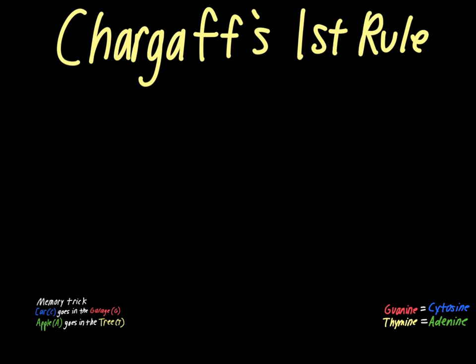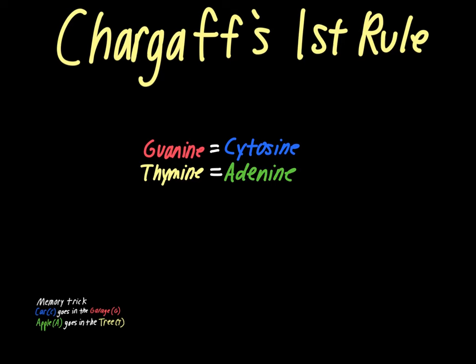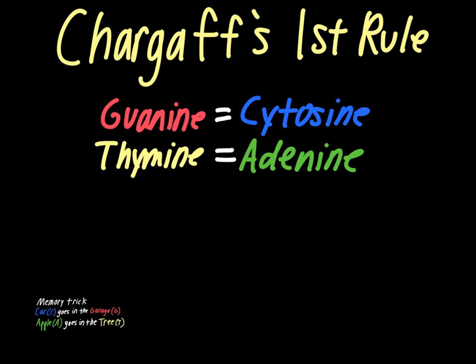The first thing to talk about with Chargaff's rule is the pattern he established. What he was doing was isolating the genetic material in a variety of different species. What he found was, no matter what the species was that he was looking at, the relative amounts of guanine were always relatively close to the amounts of cytosine. And the amounts of thymine also equaled the amounts of adenine. This was true whether he was looking at plants, mammals, or insects — it didn't matter what the species was.